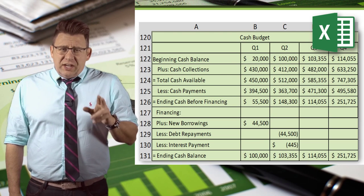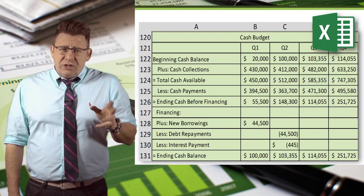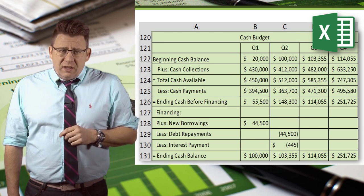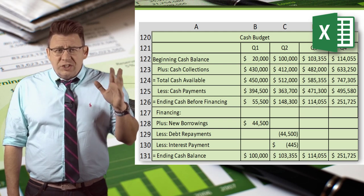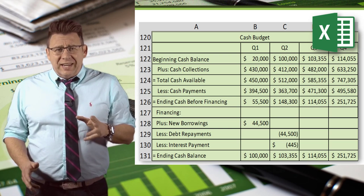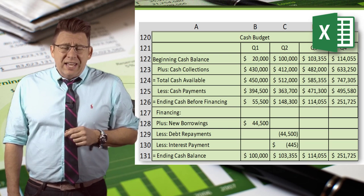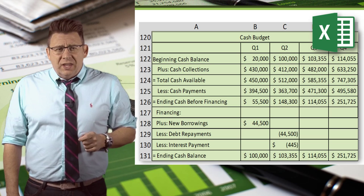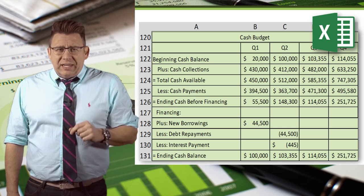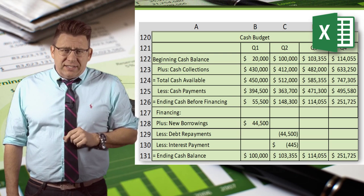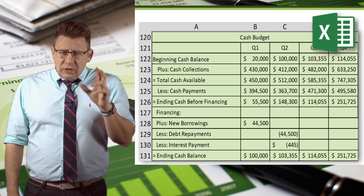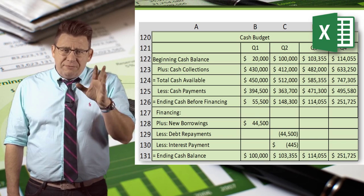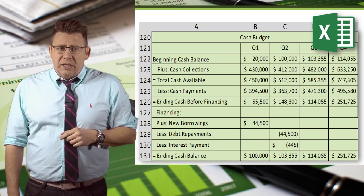Building this budget in Excel is pretty straightforward as it relates to collections and payments — those amounts would just be linked to the related cells in the cash collections and cash payments budgets. The tricky formula is the financing. To truly have this automated, you would want to use an IF formula.